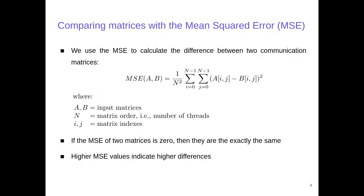To calculate the difference between two communication matrices, we use the Mean Squared Error, or MSE. The MSE is one metric used to compare the difference between images. In that case, if the MSE of two matrices is zero, then the matrices are exactly the same. Otherwise, higher MSE values indicate higher differences between the matrices.